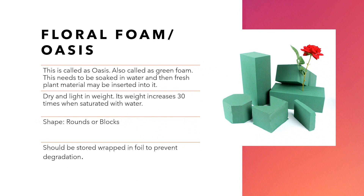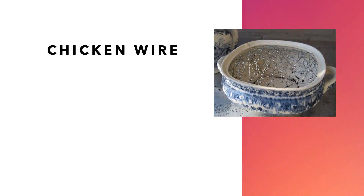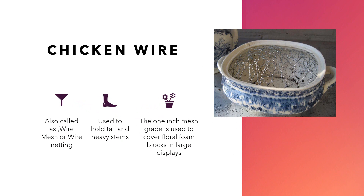To hide this particular form, it should be stored or wrapped in a foil to prevent its degradation and to hide it from the actual flower arrangement. The second one is something like a wire texture which we call as chicken wire, also called as wire mesh or wire netting. A kind of mesh or net is formed with this wire. This is used to hold the tall and heavy stems. The one-inch mesh grid is typically used to cover the floral foam blocks in large displays, with oasis kept below and the wire mesh formed on top to further hold the tall stems.